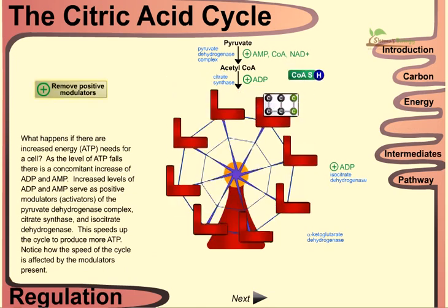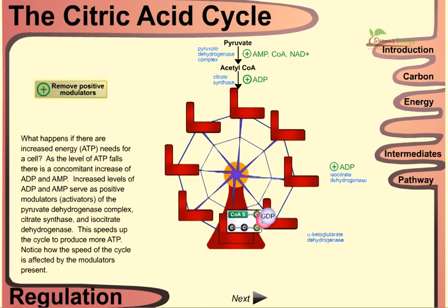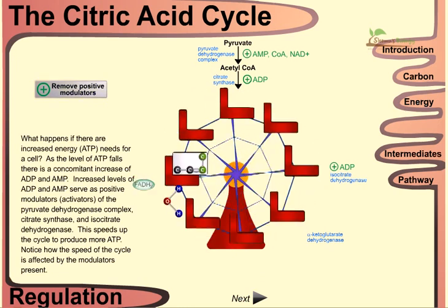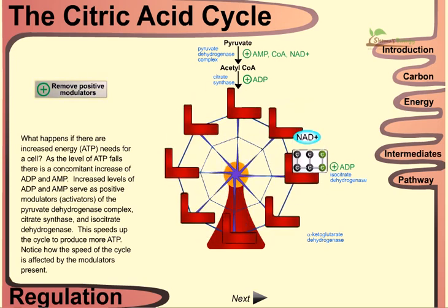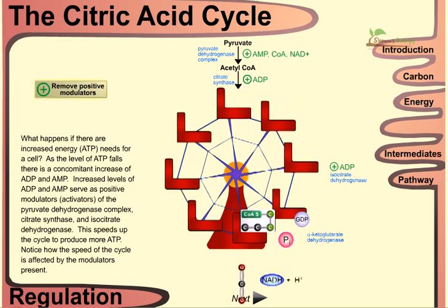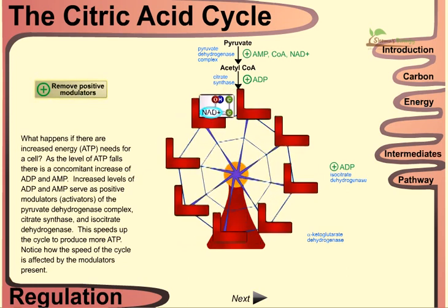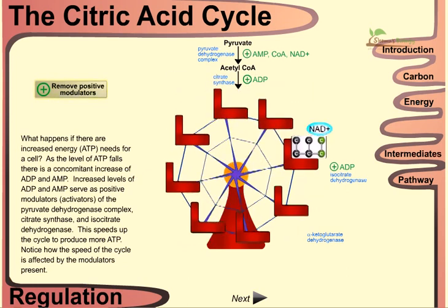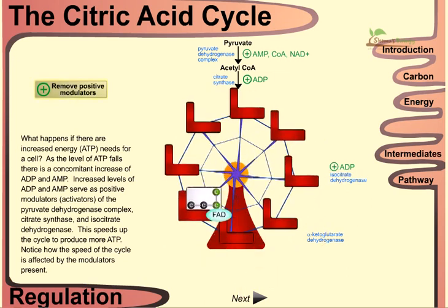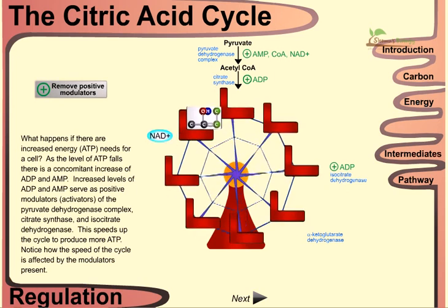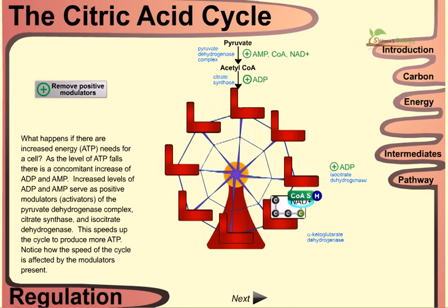Regarding the regulation of energy: when there are increased energy needs for the cell, the level of ATP falls and there is a concomitant increase in ADP and AMP. This increase in ADP and AMP serves as a positive modulator for the pyruvate dehydrogenase complex, citrate synthase, and isocitrate dehydrogenase, speeding up the cycle to produce much more ATP.